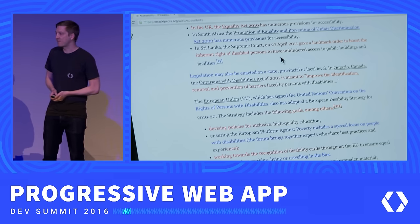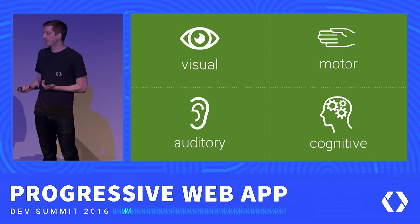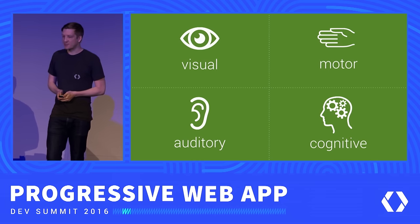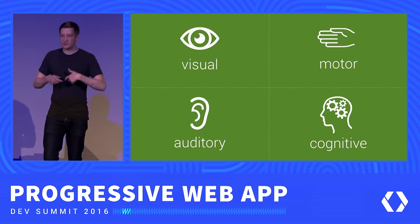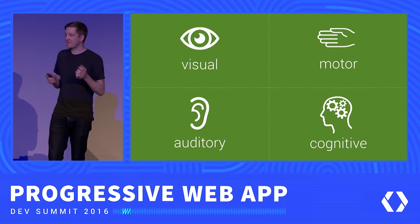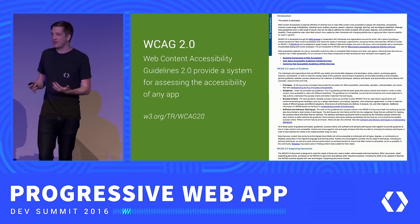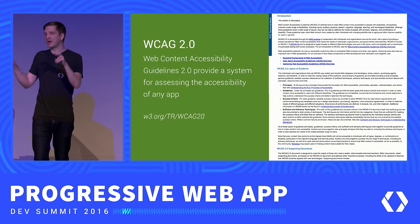Broadly speaking, these are the four categories we need to think about when working on accessibility. Because accessibility is so broad and the usership is so diverse, it can be helpful to have a guide. We can find that in the form of the Web Content Accessibility Guidelines 2.0, or WCAG. WCAG is a set of best practices put together by accessibility experts to explain what it means for something to be accessible.